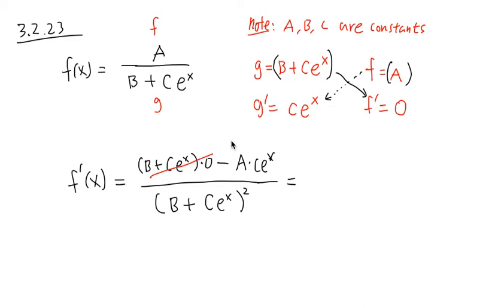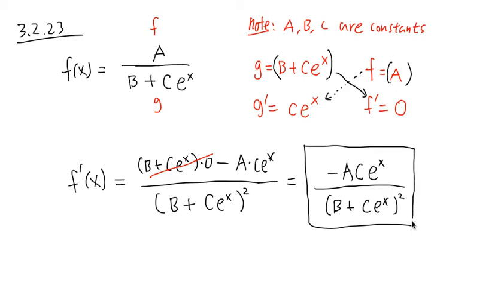And overall, what you have left on the top is just negative a c e to the x. Or over that as the denominator, b plus c e to the x raised to the second power. The key right here is that you have to know what's constant versus what's the variable.